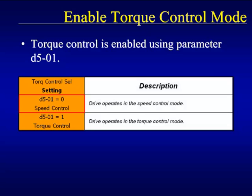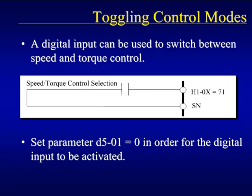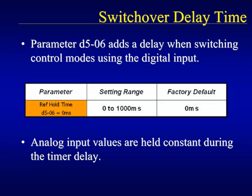Setting this parameter puts the drive in full-time Torque Control mode. If the drive will be switching between speed and Torque Control, a digital input can be set to act as a toggle switch between the two control modes. Setting any one of the multi-function inputs to setting 71 causes the input to take on this function. In order for the digital input to have any effect, parameter D501 must be set for speed control, setting zero. The user can then toggle between speed and Torque Control modes. When toggling between the control modes, a delay time of up to one second can be added to prevent instantaneous switching. Parameter D506 can be set anywhere between zero and one thousand milliseconds and is factory set for no delay.